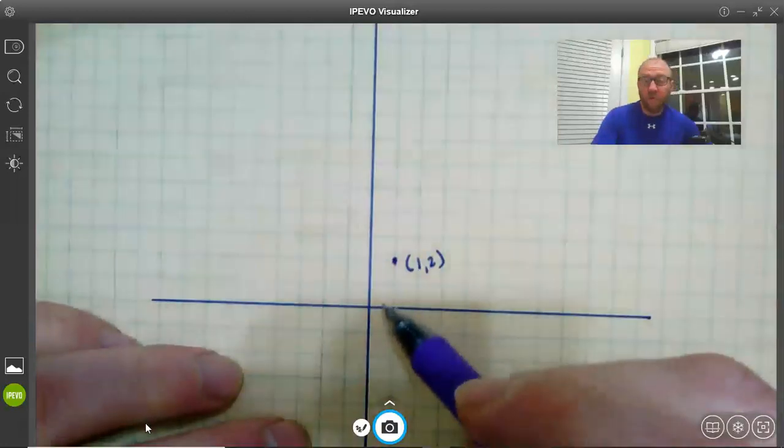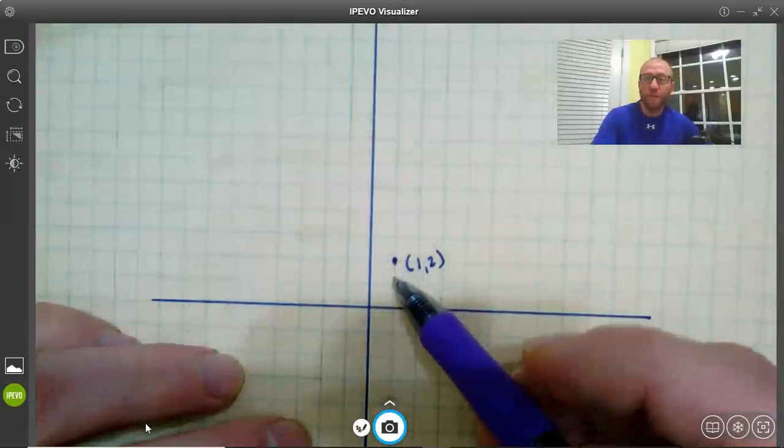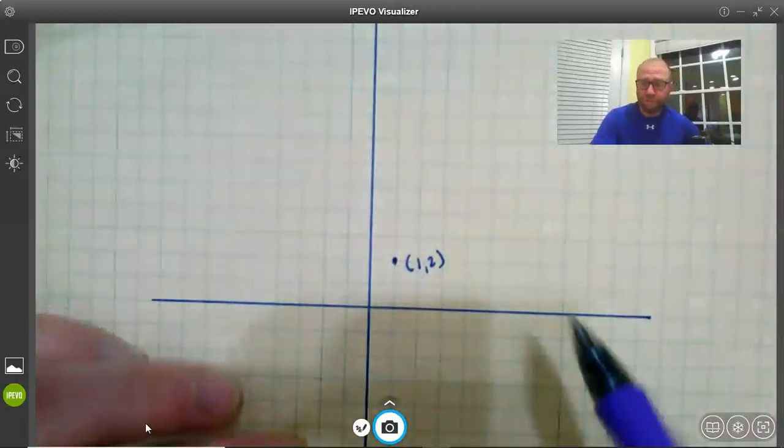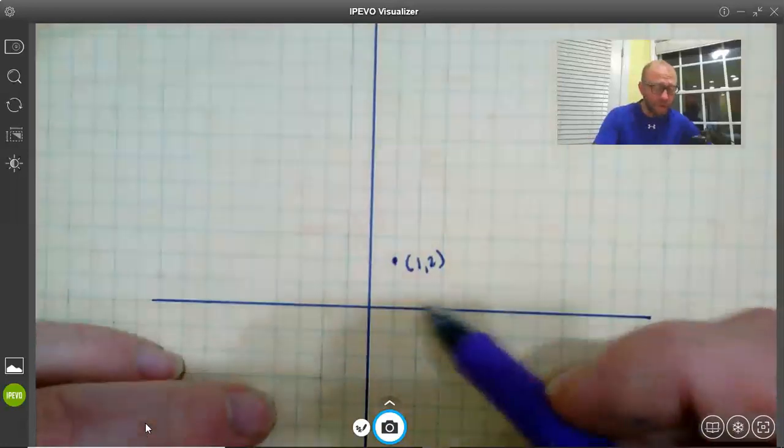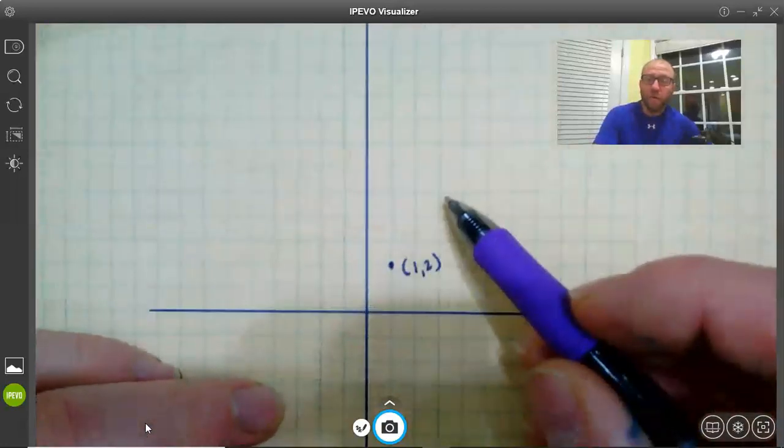Notice this point is square root of five units away: over 1, up 2, 1 squared plus 2 squared equals 5, square root of 5. If I want to find a point that's three times away, then I just take this over 1, up 2 pattern and repeat it two more times.